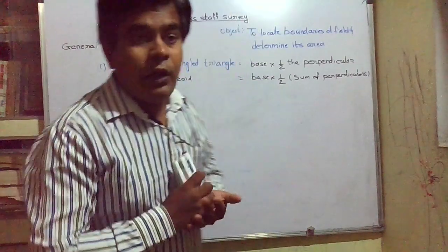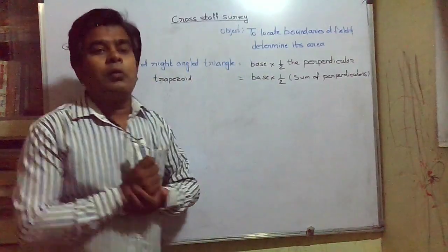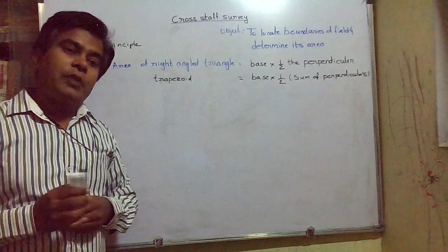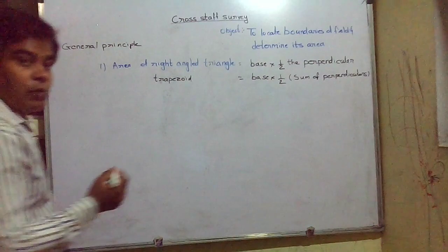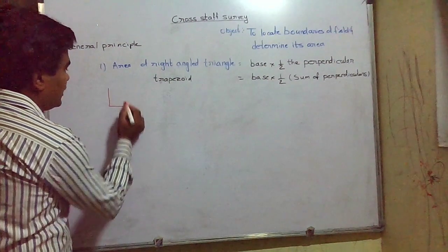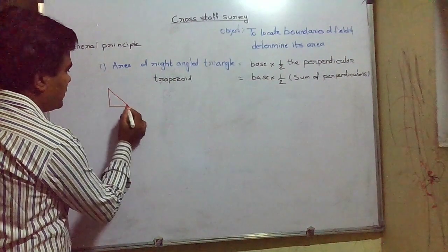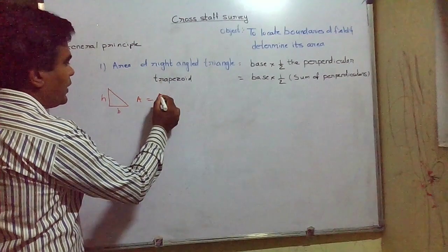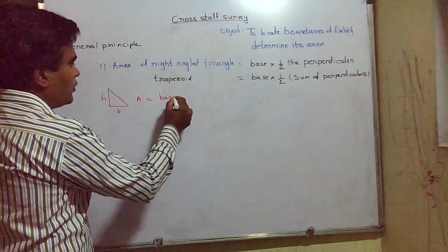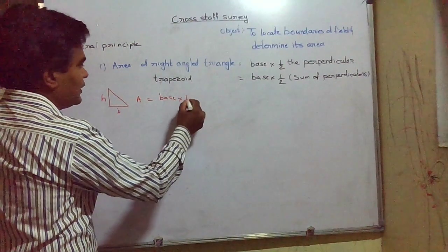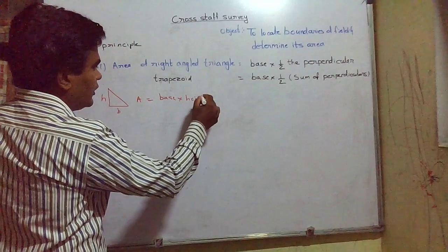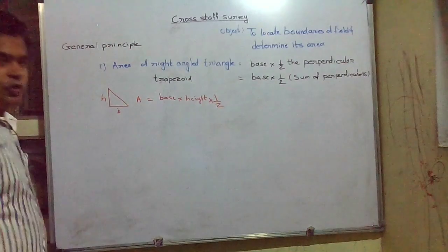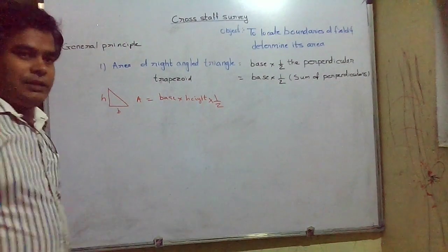What is the principle behind how do we find out the area by using cross staff survey? How we determine the area of a triangle? We know what is the formula for area of triangle. If this is the triangle, this is the base and this is the height, then area is equal to half base into height.